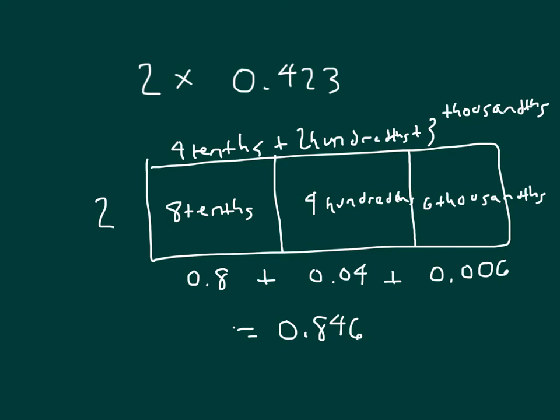And we can add those together to get 0.846. So when we multiply those together, we get 0.846. And this here was an area model. A place value chart would look much the same in that you would still get the same answer.